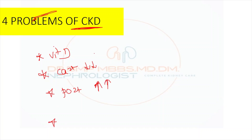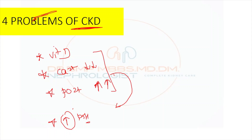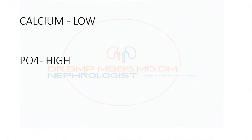Because of the elevated phosphorus, the parathyroid gland is stimulated to increase PTH secretion, leading to hyperparathyroidism. These are the four important problems occurring in CKD. In simple terms: calcium goes low, phosphorus becomes high because the patient cannot excrete the excessive phosphorus load.